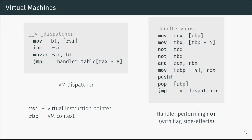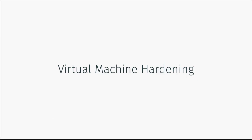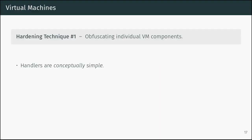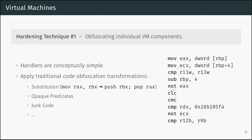How can we harden this such that reverse engineering is more complicated? First, we can look at the handler itself. We've seen they are normally really simple, but we can apply traditional code obfuscation transformations such as inserting opaque predicates, junk code, or instruction substitution.